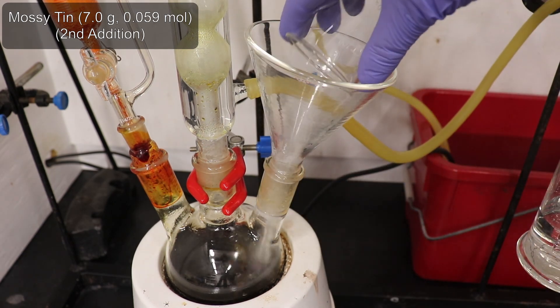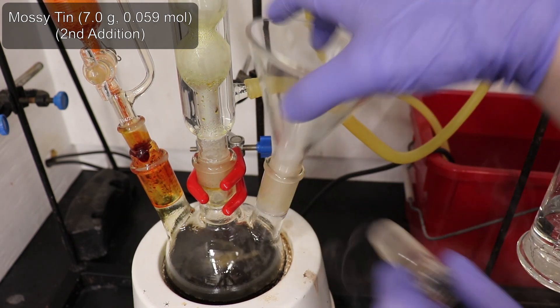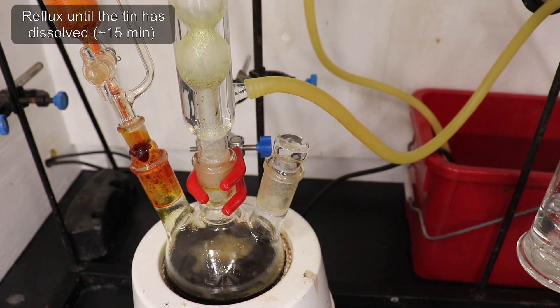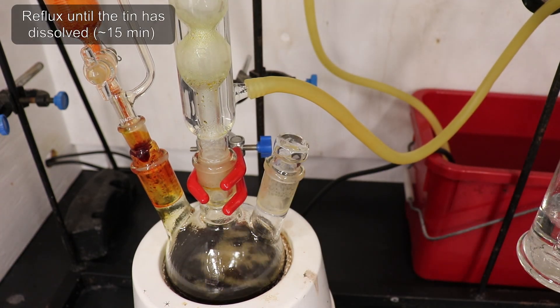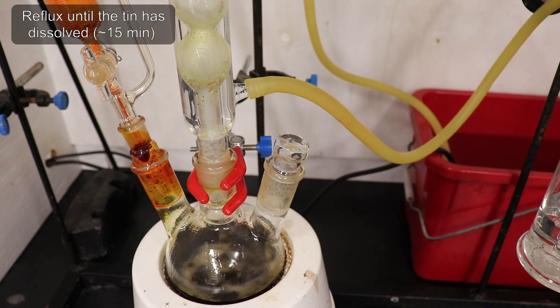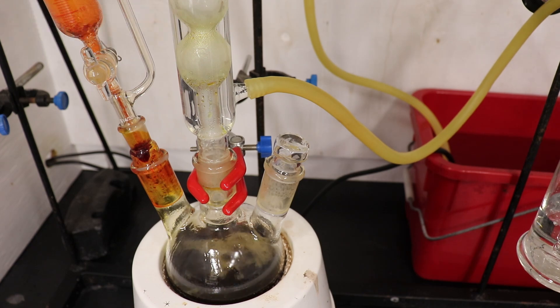I was ready to add the second 7-gram portion of tin. This time, the hydrogen bromide release was less substantial, as the tin dissolves by reacting with hydrogen bromide from the previous bromination step. The second portion took around 15 minutes to dissolve, slightly longer than the first.